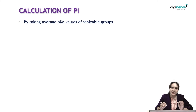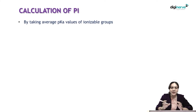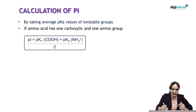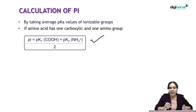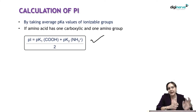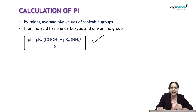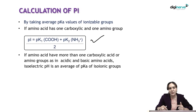By taking the average of the pKa values of the two ionizable groups — the carboxylic acid group and the amino group — we can calculate the isoelectric point. The formula takes the pKa of the carboxylic acid group and the pKa of the NH3 group, and their mean gives the isoelectric pH.